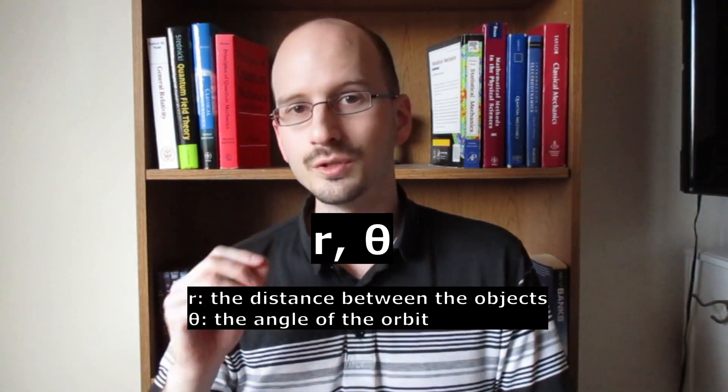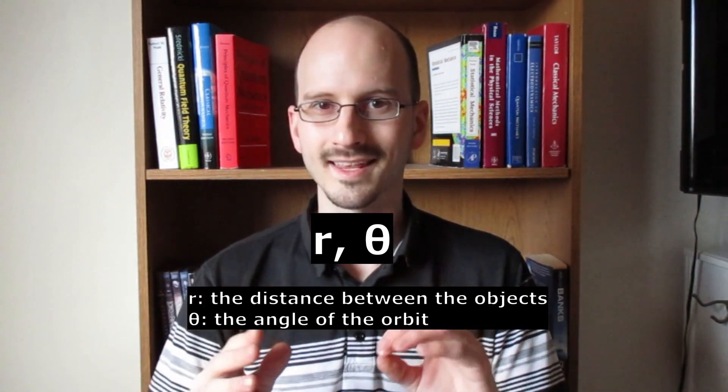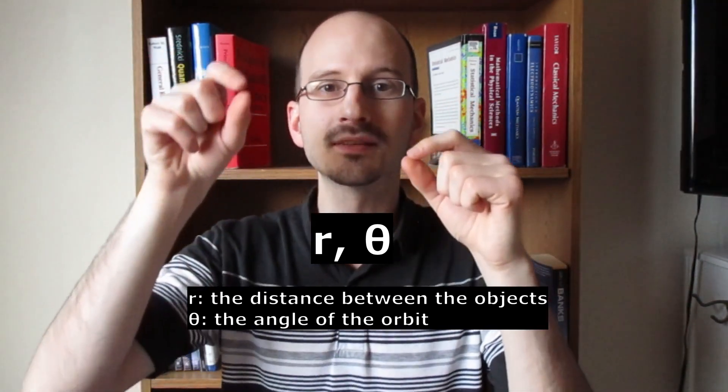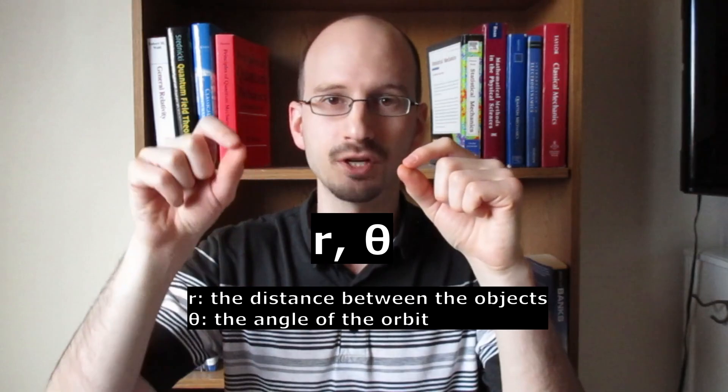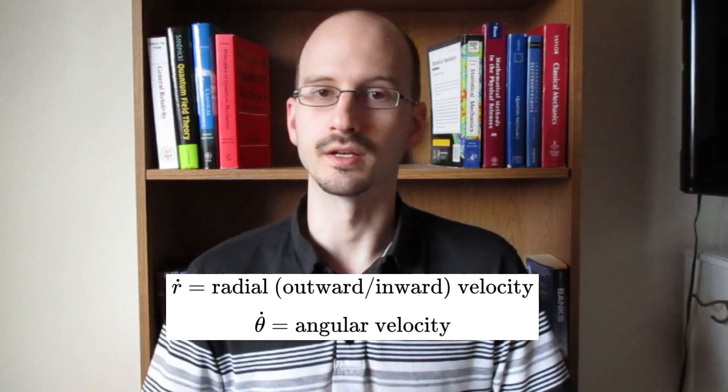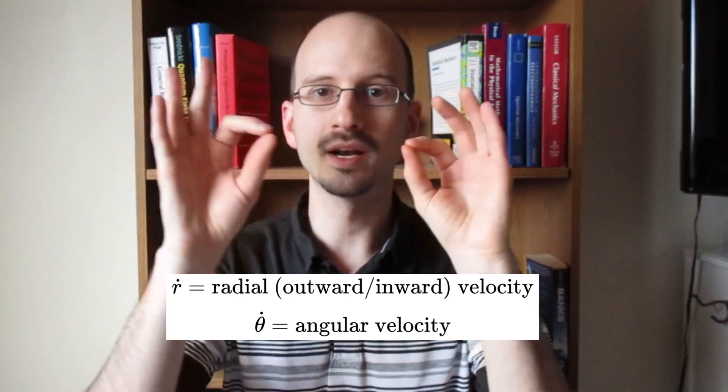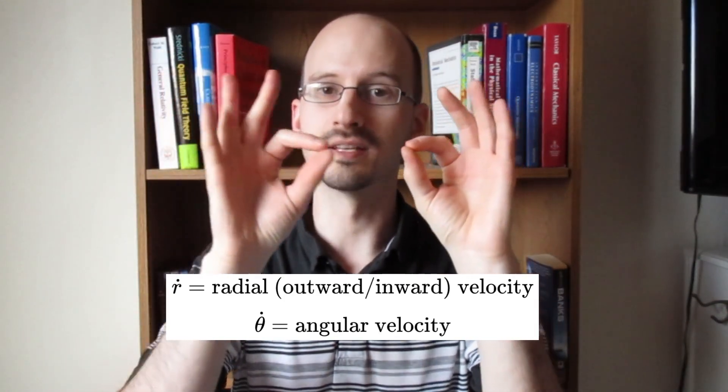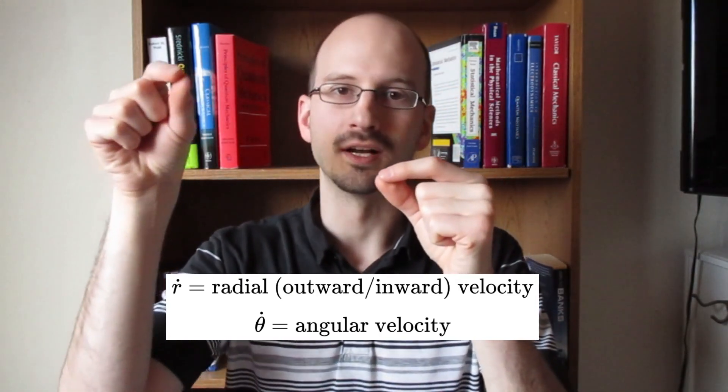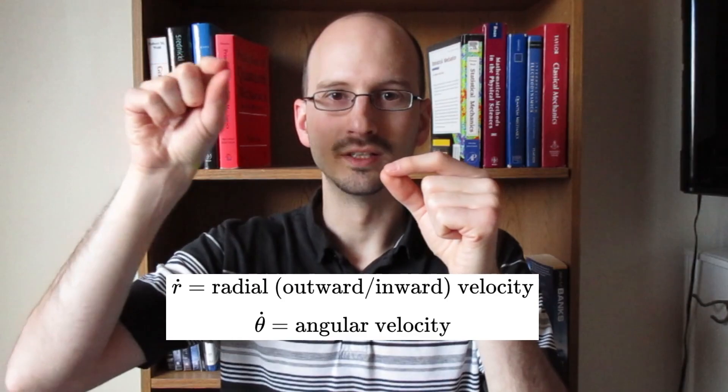In this chapter we'll be using two coordinates r and theta. r is the distance between two objects, whereas theta is the angle of their position in their orbits. And remember a coordinate with a dot on it means a rate of change. So r dot is the radial velocity, it's how fast the distance is changing. Theta dot is the angular velocity, it's how fast the angle is changing.